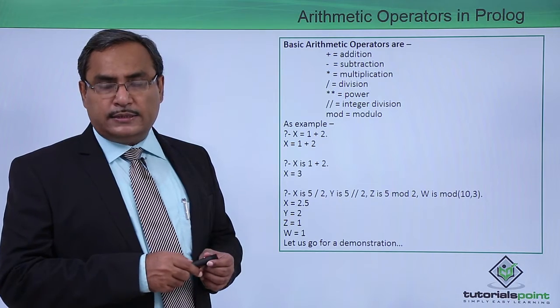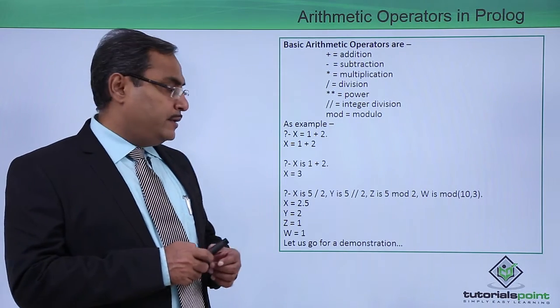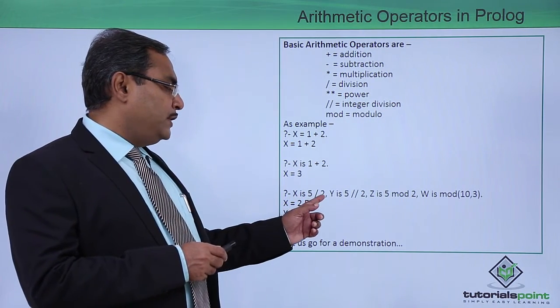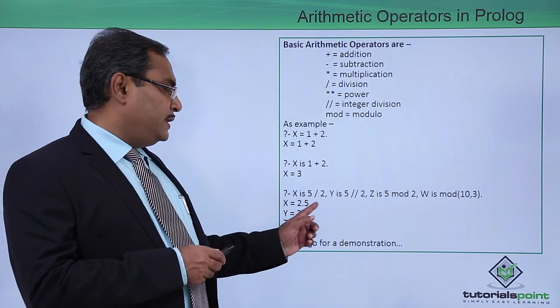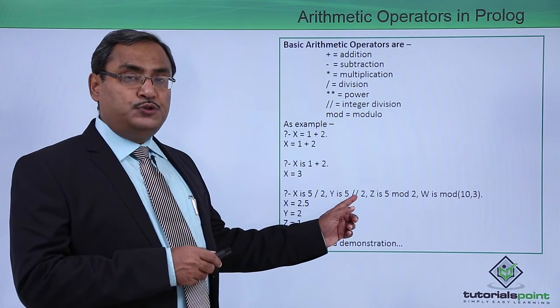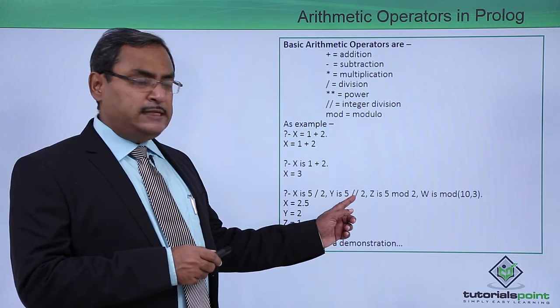X has been written in capital letters, that denotes that it is a variable. X is 5 by 2, it will give you 2.5. Y is 5 double slash 2, that means integer division.